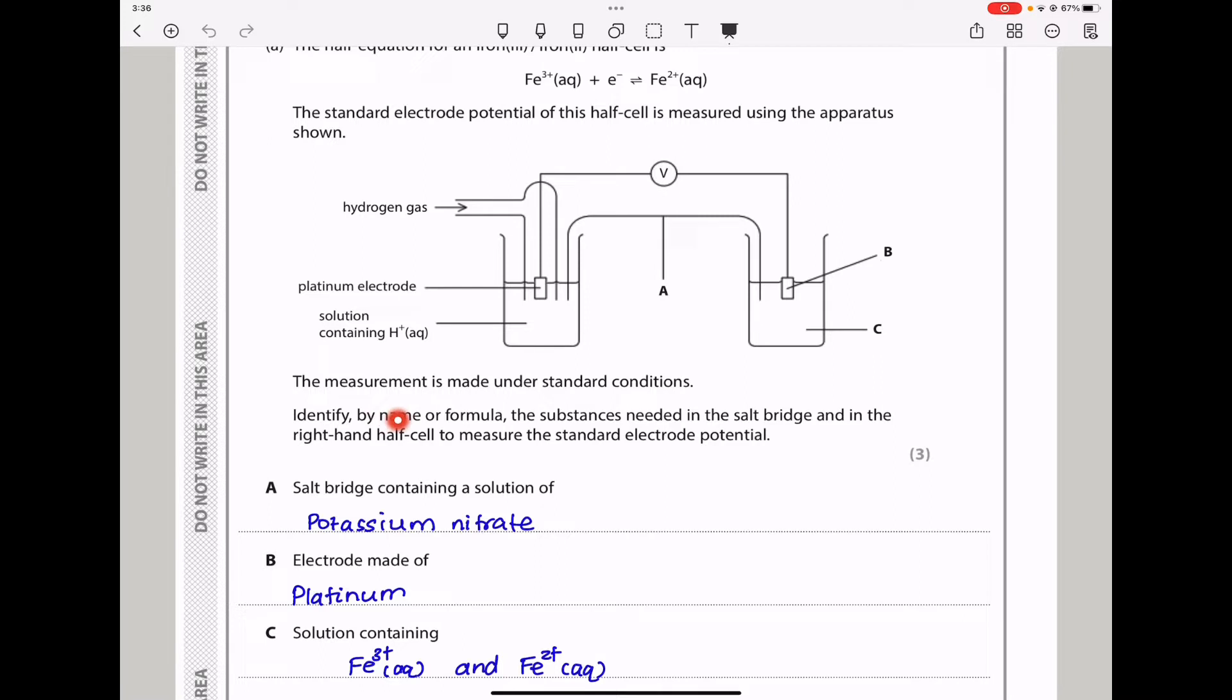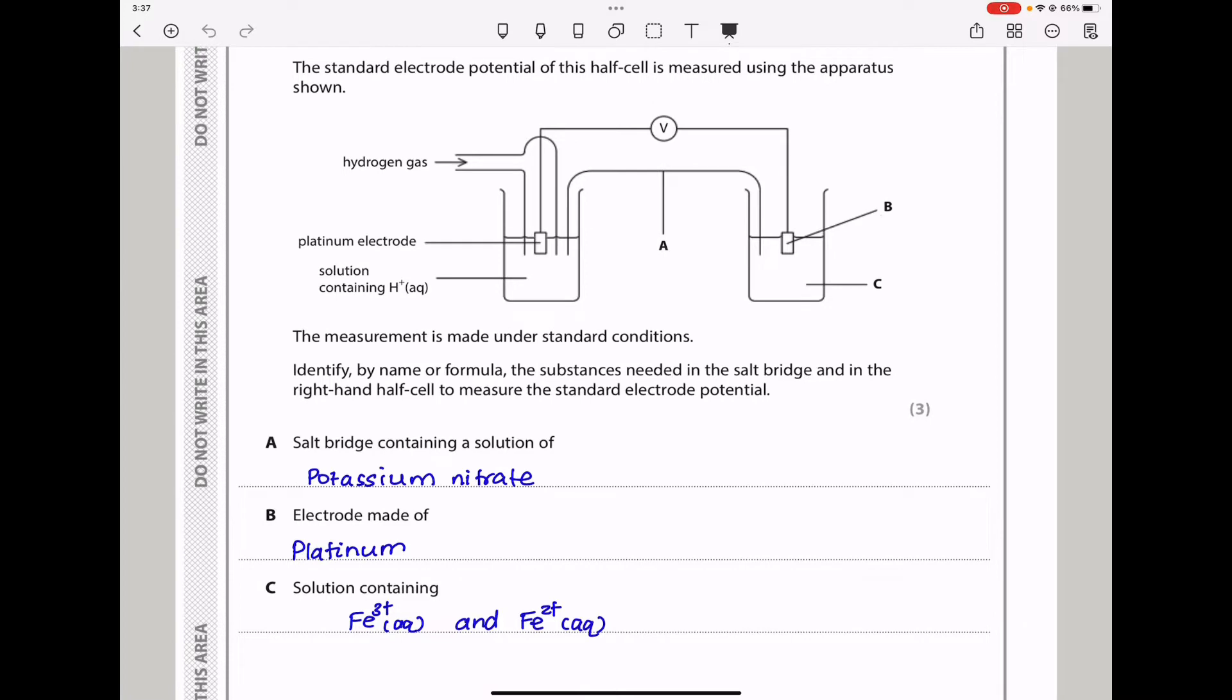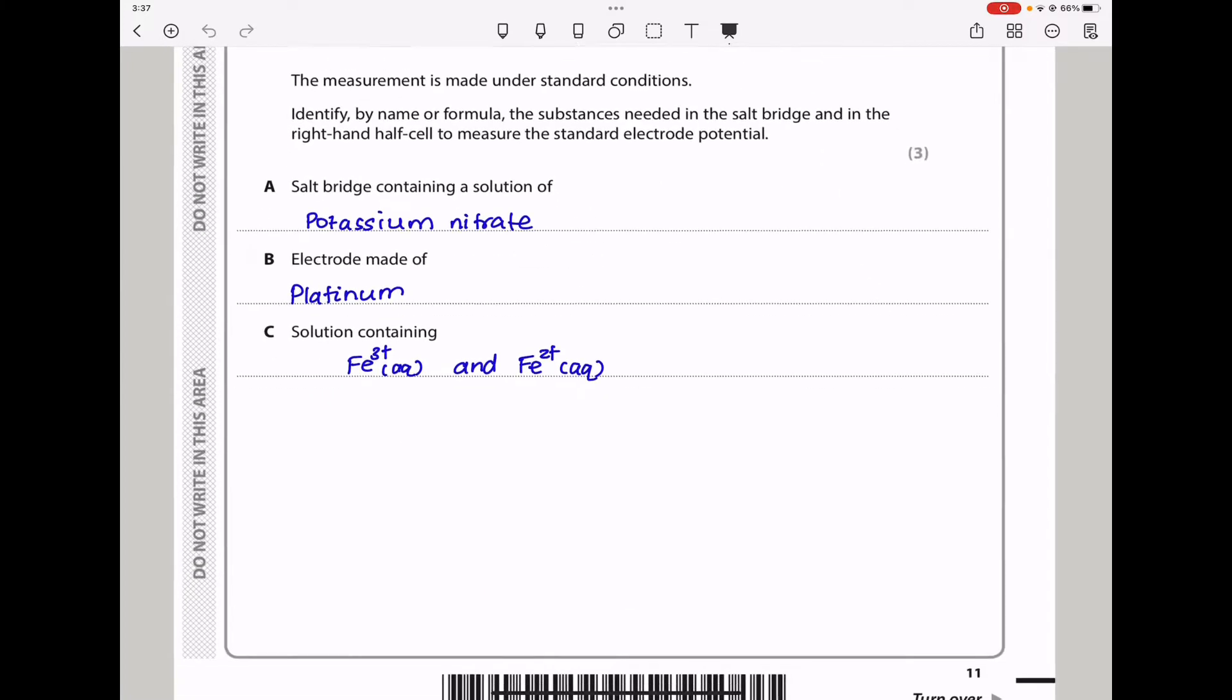They say identify by name or formula the substances needed in the salt bridge and in the right-hand half cell to measure the standard electrode potential. Salt bridge containing a solution of potassium nitrate. Electrode B should be platinum, and the solution should contain Iron3+ ions as well as Iron2+ ions.